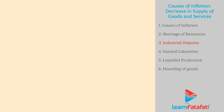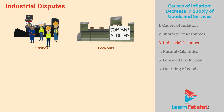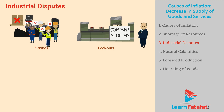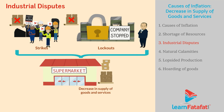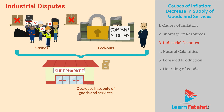Industrial Disputes: Industrial disputes relate mainly to strikes and lockouts. During strikes, workers stop working which results in no production. Similarly, the industry owner may lockdown the industry and stop production. Both cases lead to a decrease in supply of goods and services, and thus prices increase and inflation takes place.